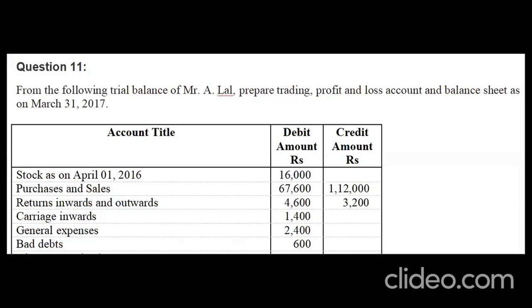The marshalling of balance sheet takes place when both the asset and liability sides have the same totals. Now we will see an example of final account basics — that is, without adjustments — where we are supposed to prepare trading, profit and loss account, and balance sheet.